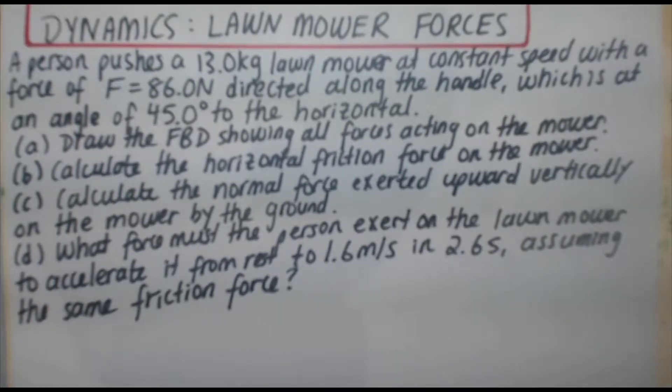A person pushes a 13.0 kilogram lawnmower at constant speed with a force of F equals 86.0 newtons directed along the handle, which is at an angle of 45.0 degrees to the horizontal. Part A, draw the free body diagram showing all forces acting on the mower.